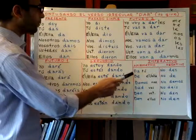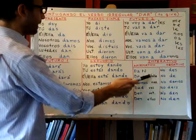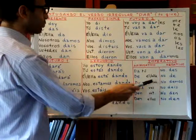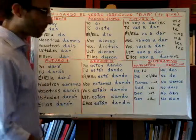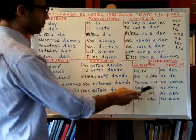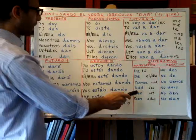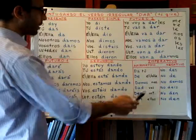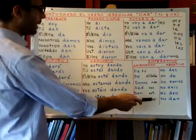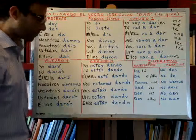In the affirmative we say: da tú; de él or ella; demos nosotros — let's give; dad vosotros — you plural give; den ustedes — you plural give; and den ellos — for they.